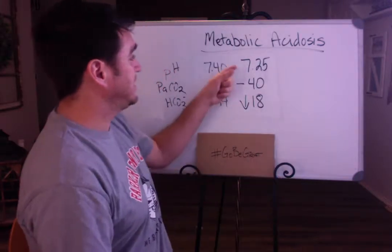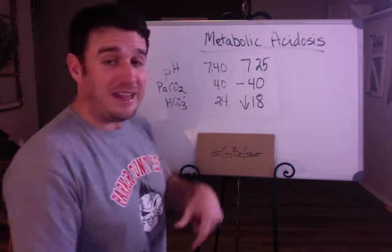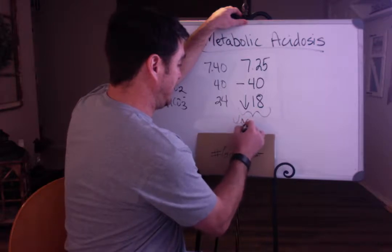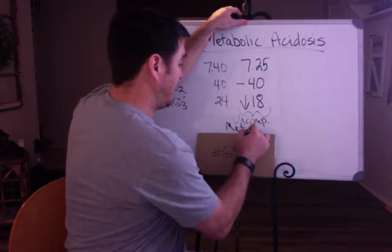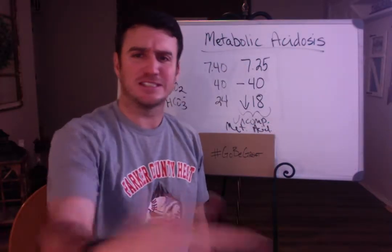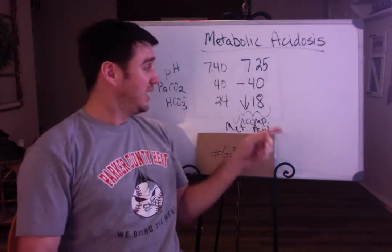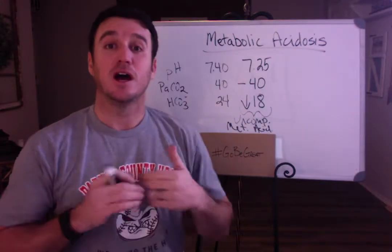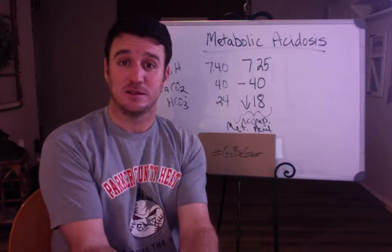So we look at pH 7.25, CO2 40, bicarb 18 — we're going to call this an uncompensated metabolic acidosis. Why is it uncompensated? Because the CO2, the respiratory system, the compensatory mechanism has not kicked in yet. You have more acid than buffering agent and it's causing your pH to go down.